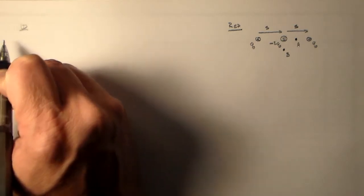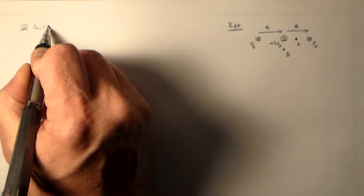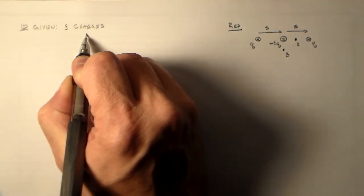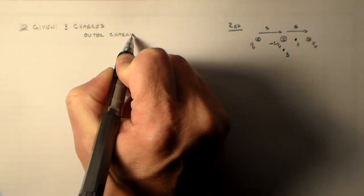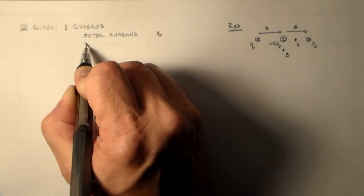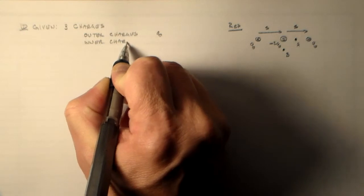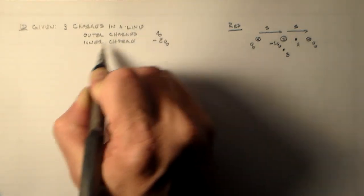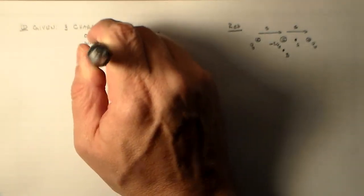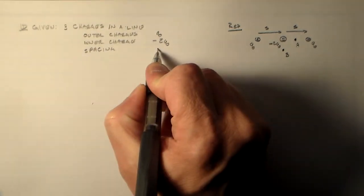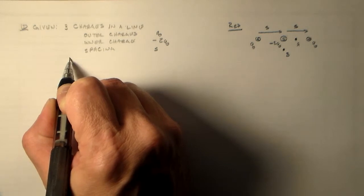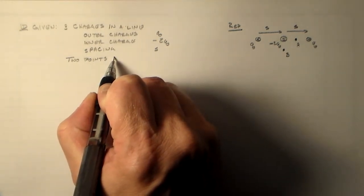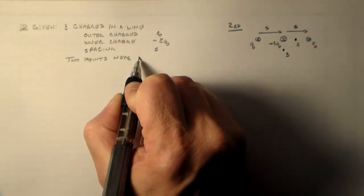So first of all, we want to know what is it we have, right? So we have three charges with the outer charges Q and the inner charge minus 2Q. These are in a line and they have a spacing S.